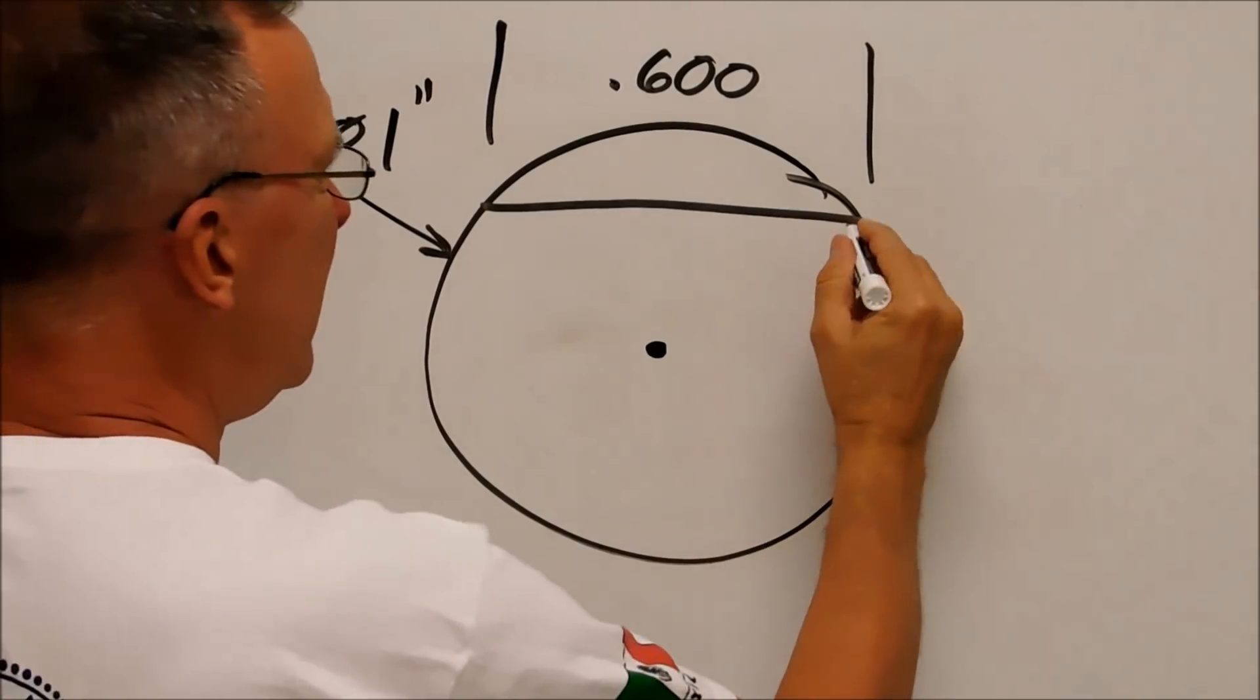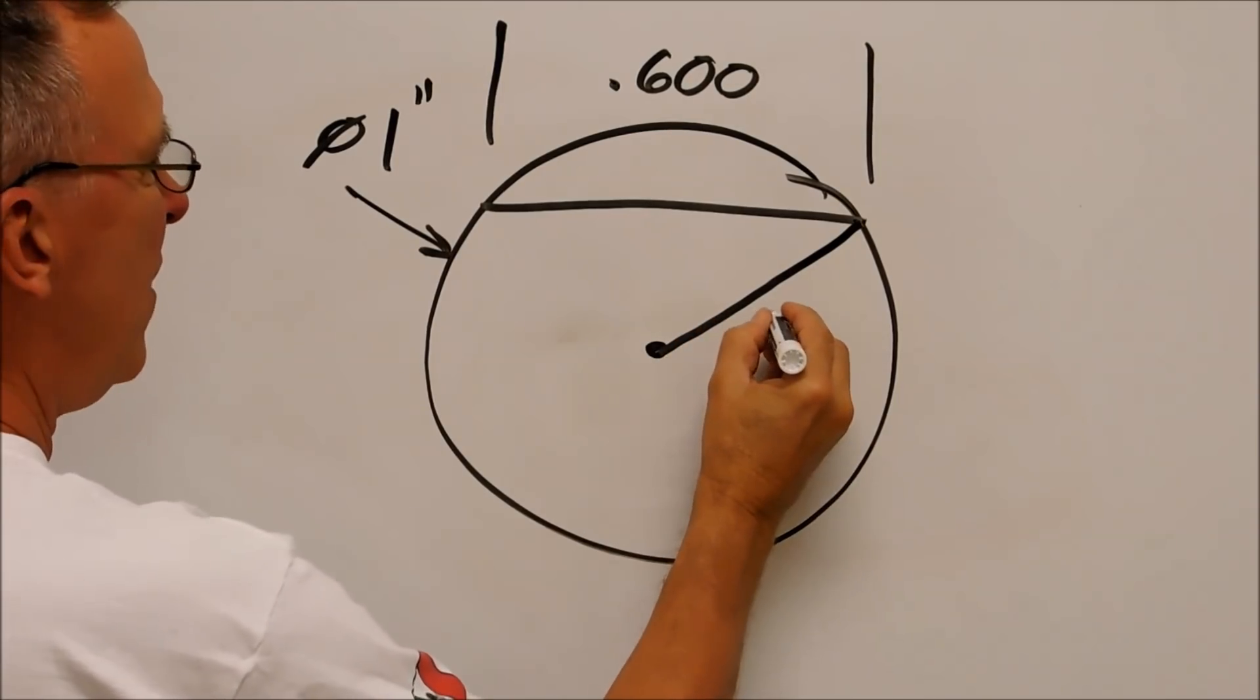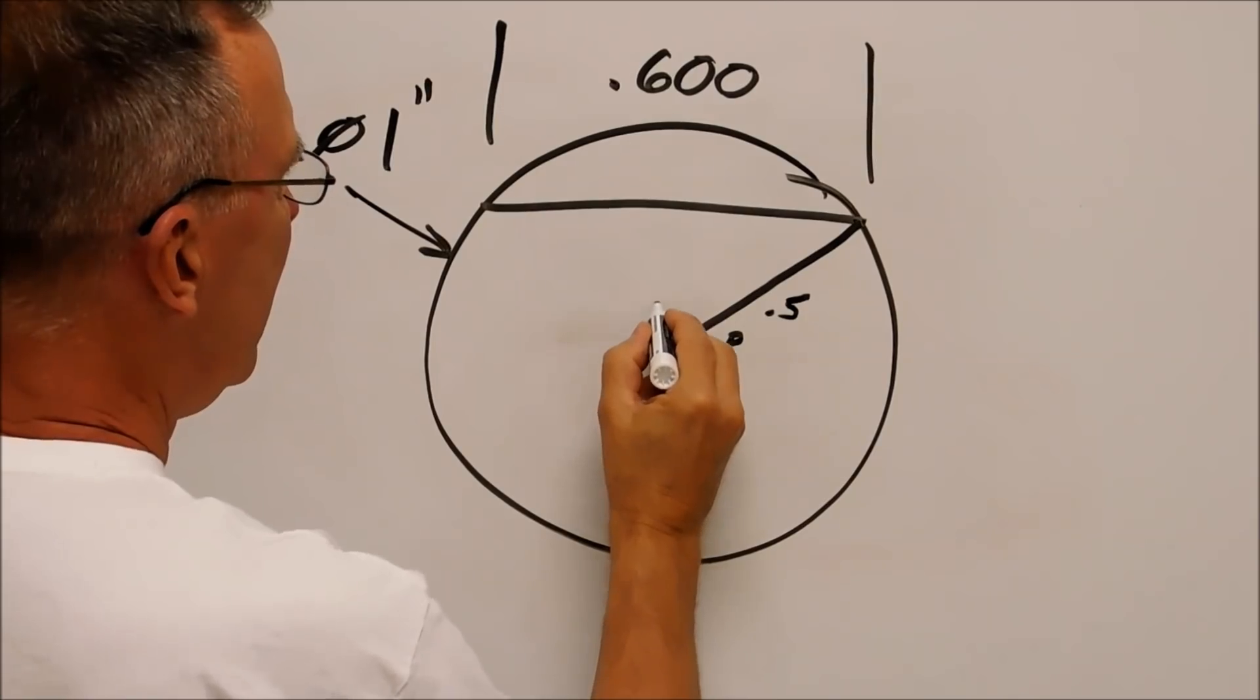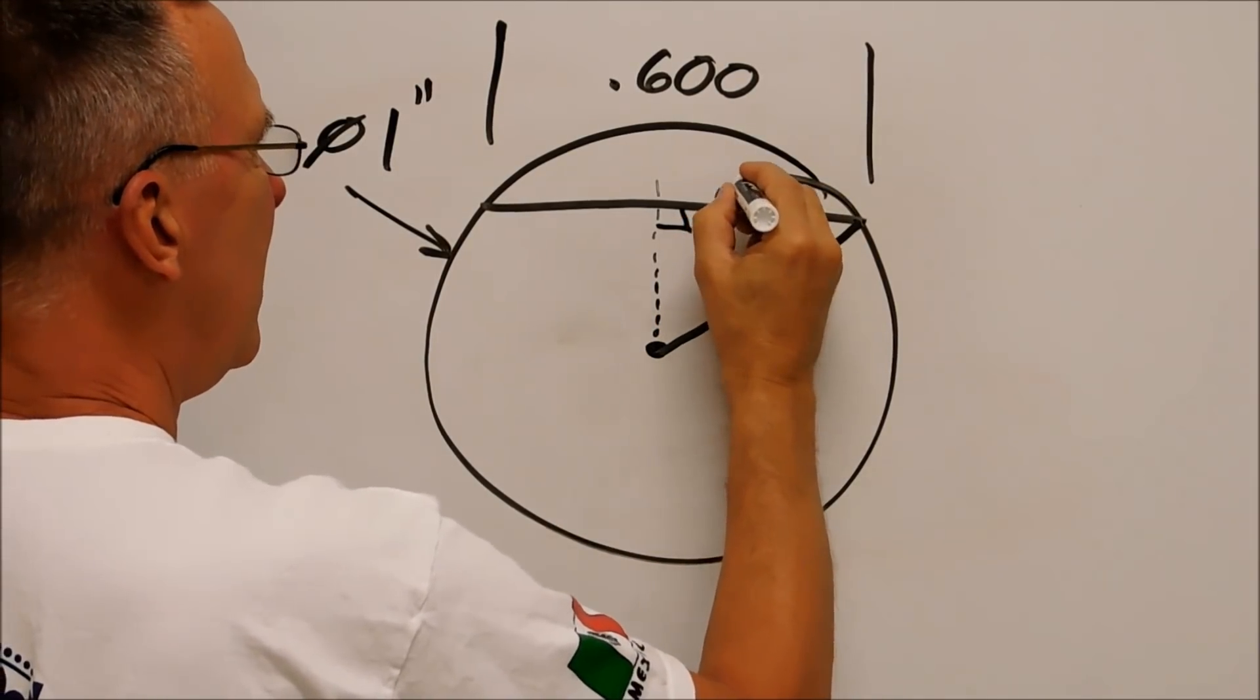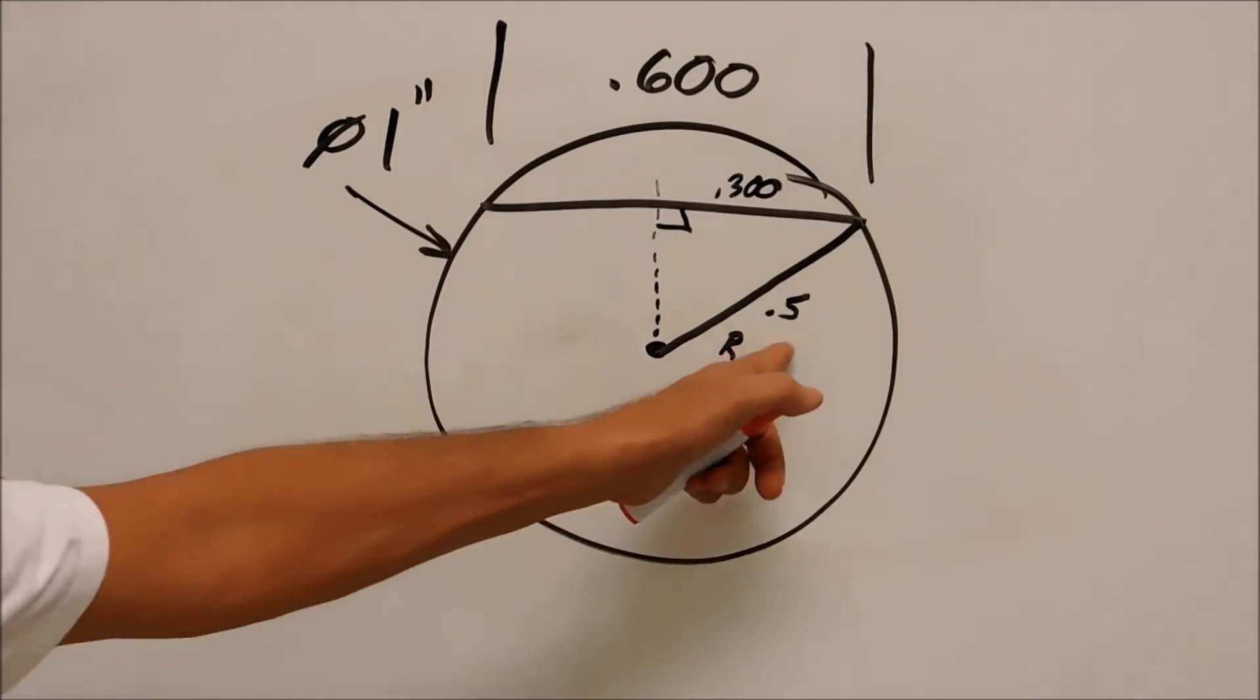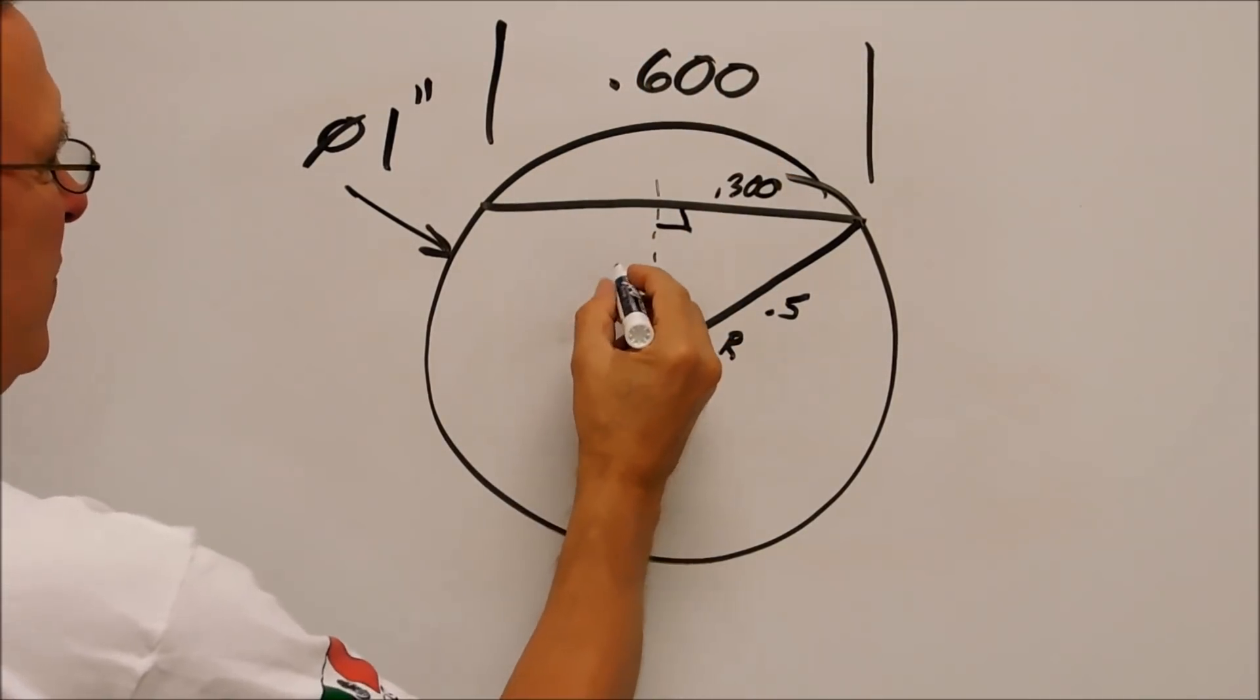Where's the triangle? This is your radius value. So that's 0.5. Perpendicular. Square corner. Splits the chord. This is 300. Now that you have the 0.5 and the 0.3, you use the same A², B², C² formula. It gives you this leg.